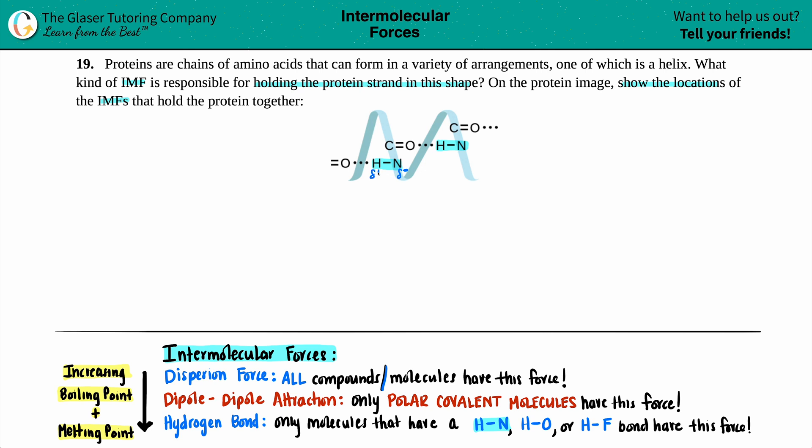These little wonky symbols, this curvy S, is talking about dipole, and that's the partial positive, partial negative value. So opposites attract. The hydrogen is now going to form a hydrogen bond with an oxygen that should be partial negative, because opposite charges will come together.